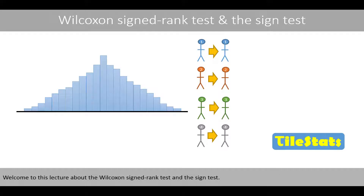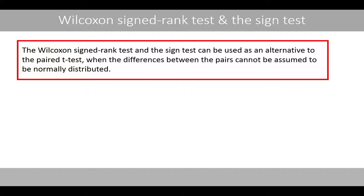Welcome to this lecture about the Wilcoxon Signed-Rank test and the Sign Test. The Wilcoxon Signed-Rank test and the Sign Test can be used as an alternative to the paired t-test when the differences between the pairs cannot be assumed to be normally distributed.